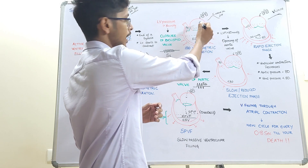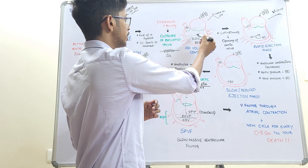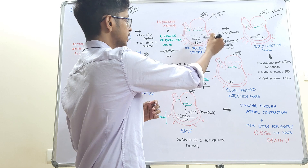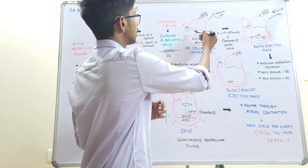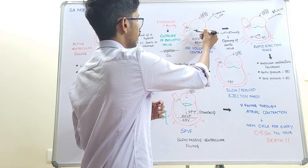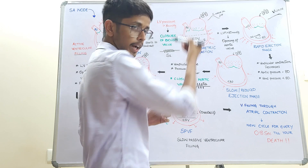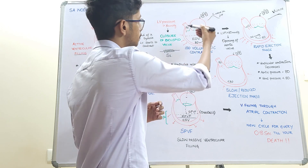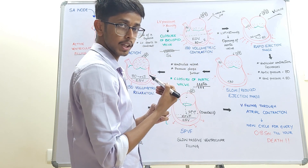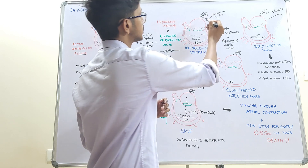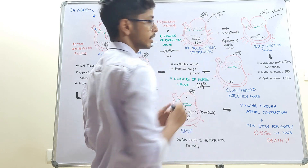During the initial phase of ventricular contraction, the bicuspid valve bulges into the atria. This bulge creates a pressure wave in the JVP, producing the C-wave of the JVP.